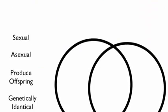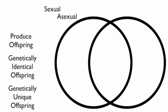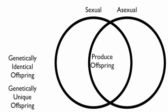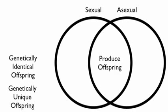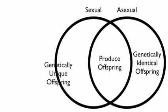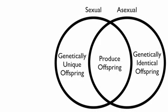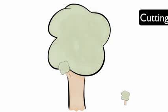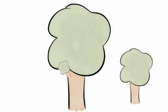Both sexual and asexual reproduction produce offspring. However, asexual reproduction makes genetically identical offspring, while sexual reproduction makes genetically unique offspring. So try taking a cutting of a plant — you will be making another that has the same DNA as the parent. You just helped the plant to reproduce asexually.